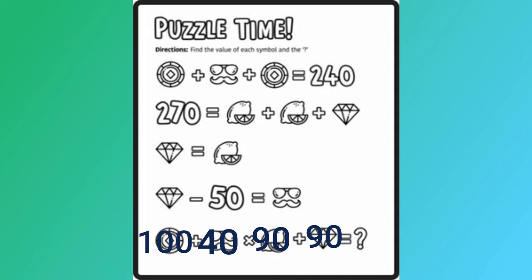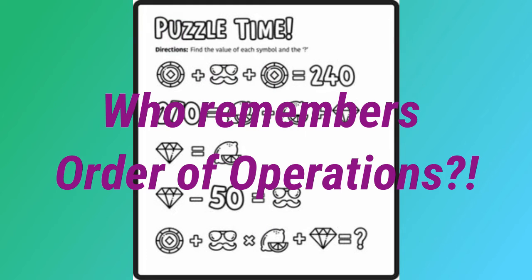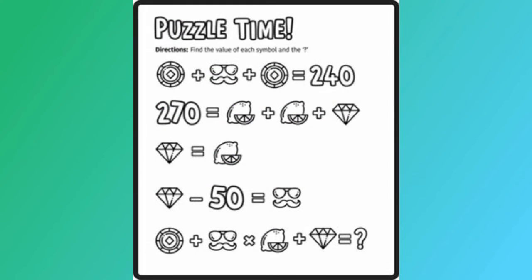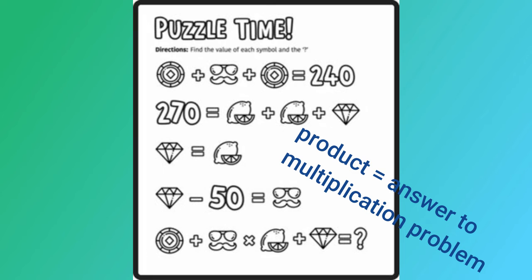So I know with my order of operations that my multiplication comes first. Do not start with addition. Start with multiplication, which means we are multiplying that disguise, which we know is 40, times the citrus fruit, which is 90. Once we multiply the two of those together and you get that product, remember a product is the answer to a multiplication problem.